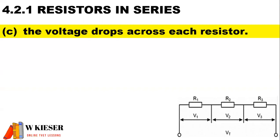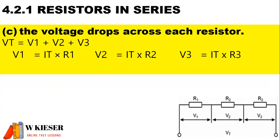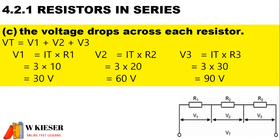To calculate the voltage drops across each resistor using Ohm's Law, V is equal to I times R. The supply voltage is equal to the sum of the volt drops. The current throughout the series circuit remains the same at three amps. The value of R1 is 10 ohms, R2 is 20 ohms, and R3 is 30 ohms. If we add up the voltage drops, we'll find that it will be the same as the supply voltage of 180 volts.